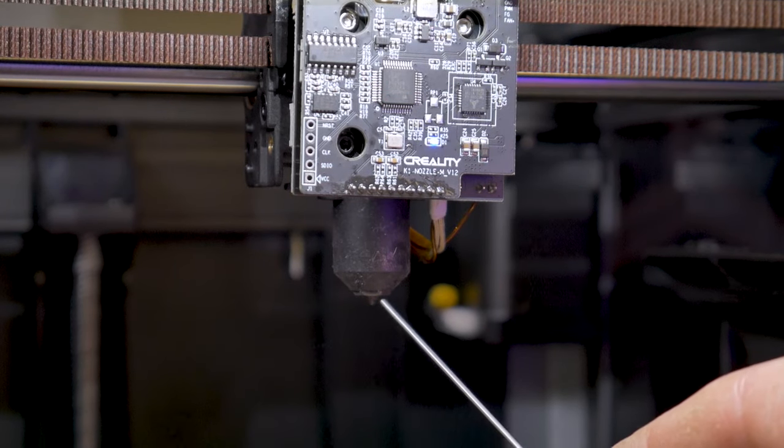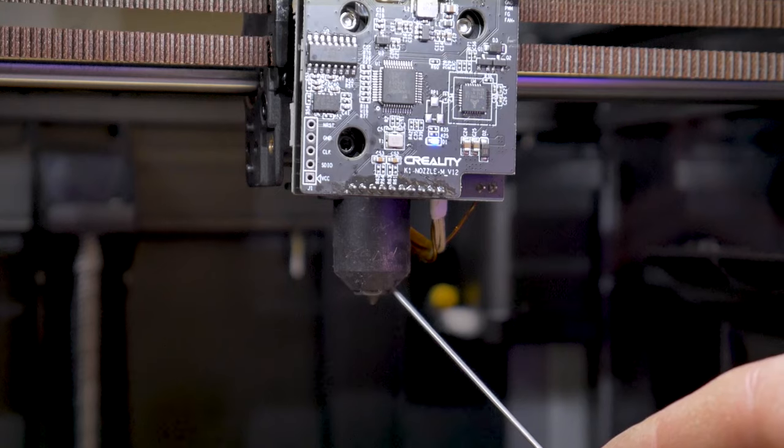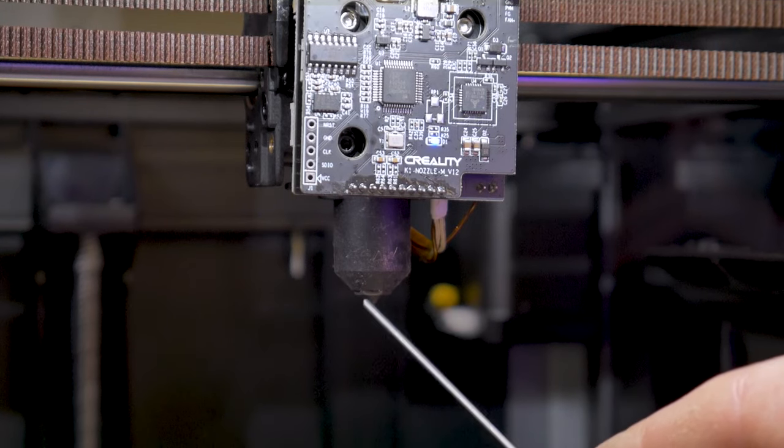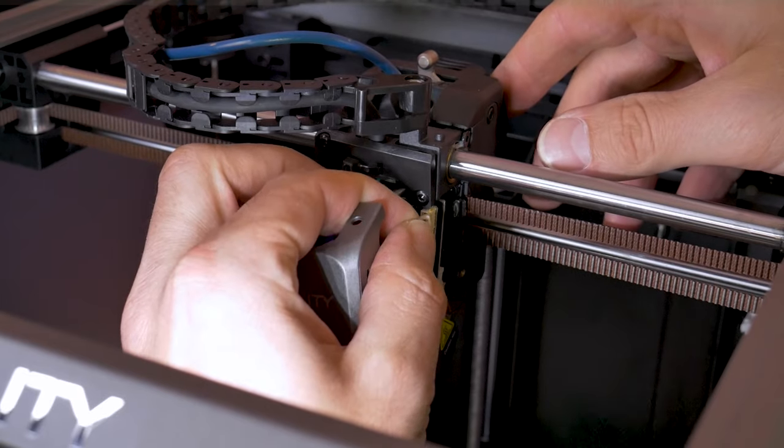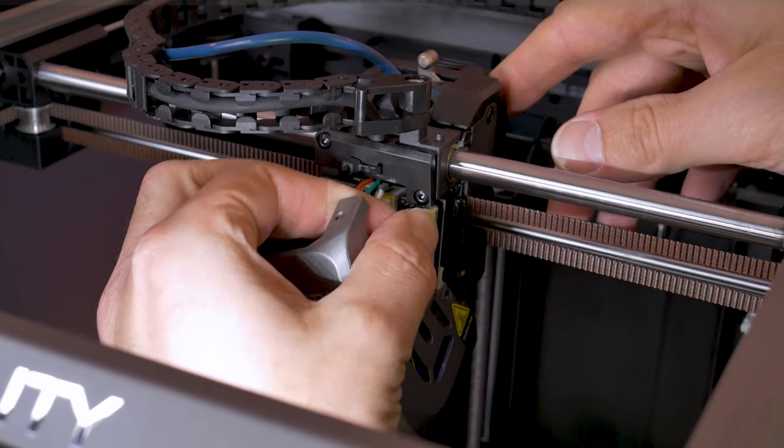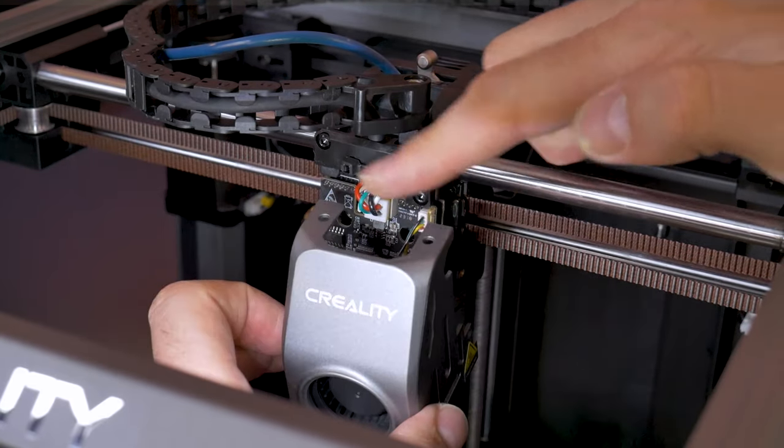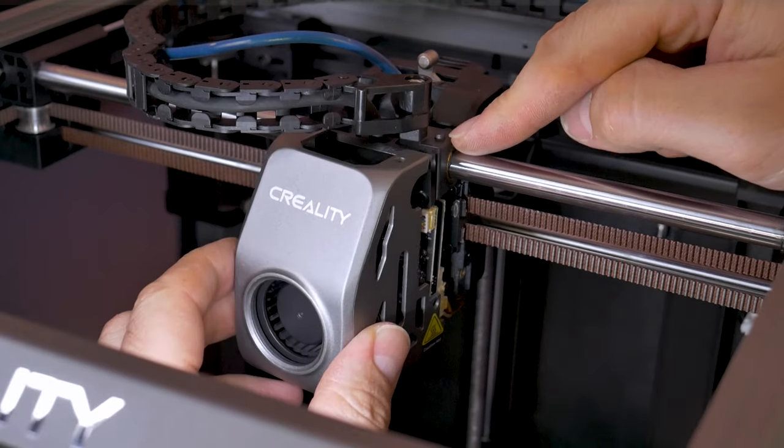The new hardened nozzles may not stick out of the silicone boot as far as the original brass ones do, so this is completely normal and it'll look something like this. Then you'll want to turn the machine power off and we're going to plug our part cooling fan back in and reinstall our front cover.